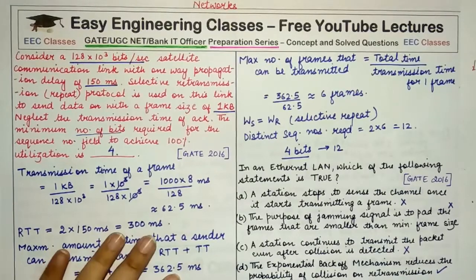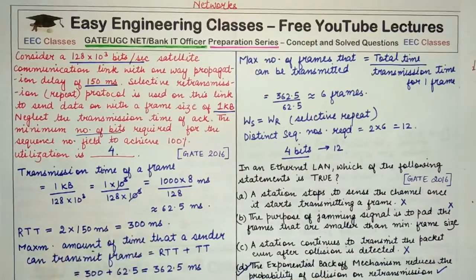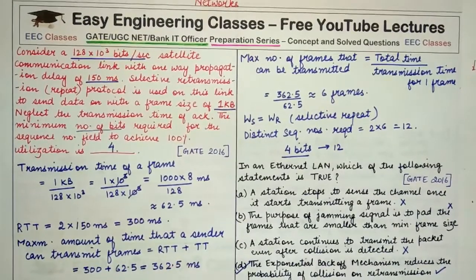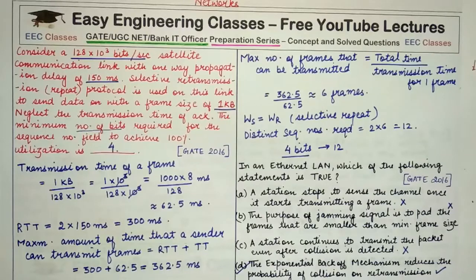The exponential backoff algorithm reduces collision probability when frames are retransmitted, making option D the correct answer. That's all for today's lecture. Stay tuned to Easy Engineering Classes for more lectures in our preparation series. Like and share the video with your friends, and mention in the comments how you found it. Thanks for watching — good luck!